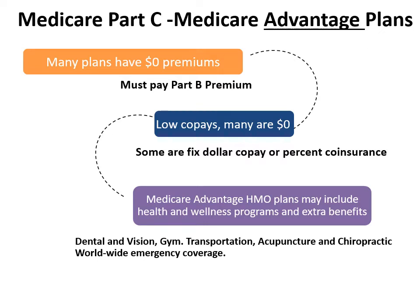Many Medicare Advantage plans have low or no monthly premium. Medicare Advantage health plans may include health and wellness benefits not covered by Medicare Parts A and B, such as dental, vision, gym membership, transportation, and acupuncture. Medicare Advantage health plans may also include a Part D prescription drug plan.